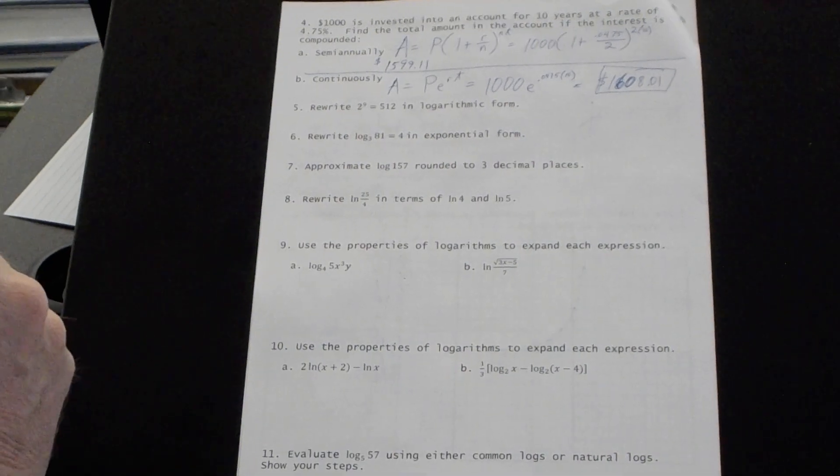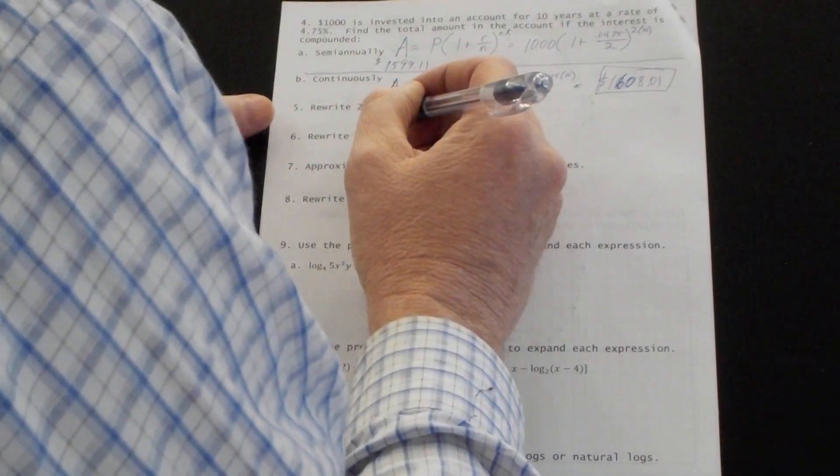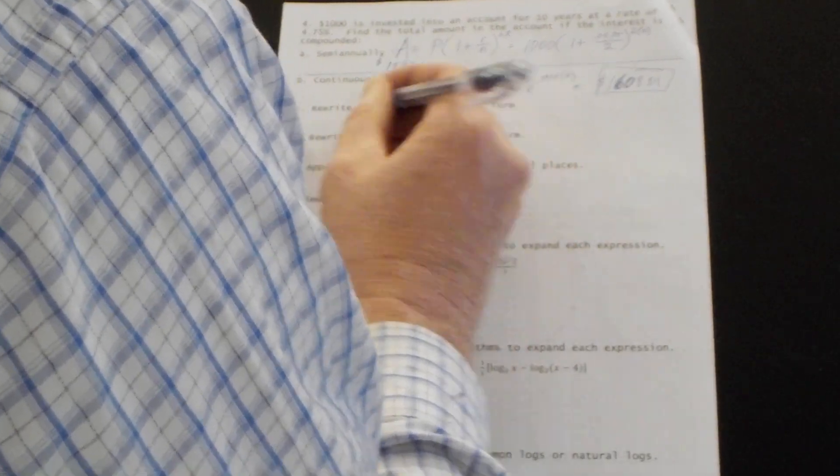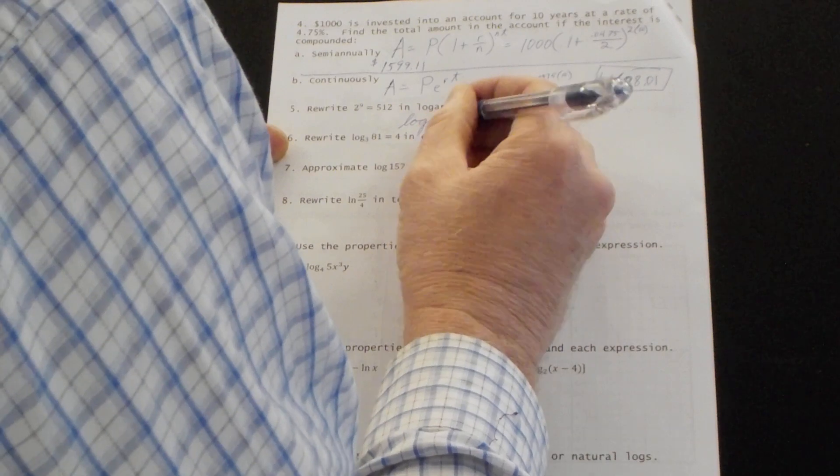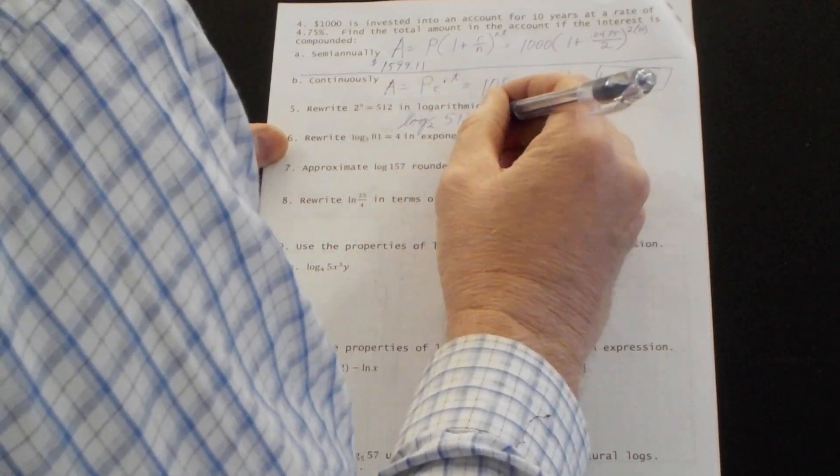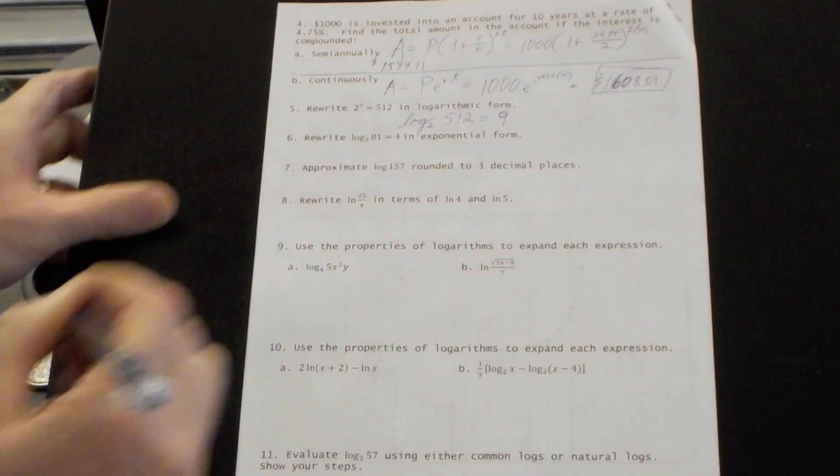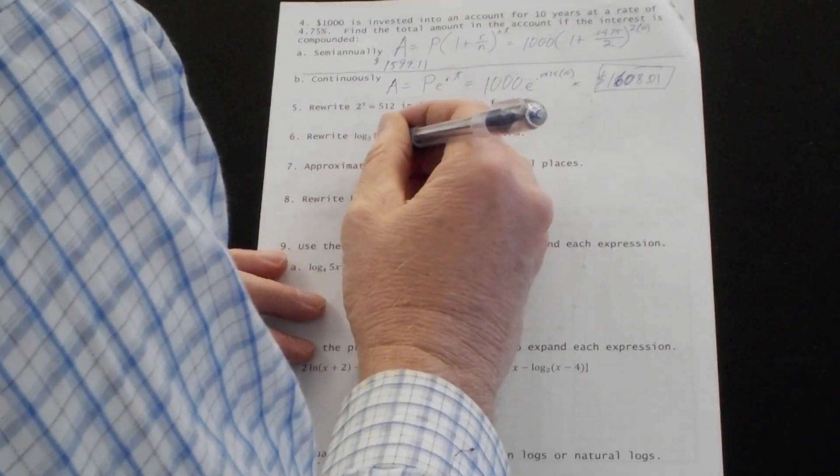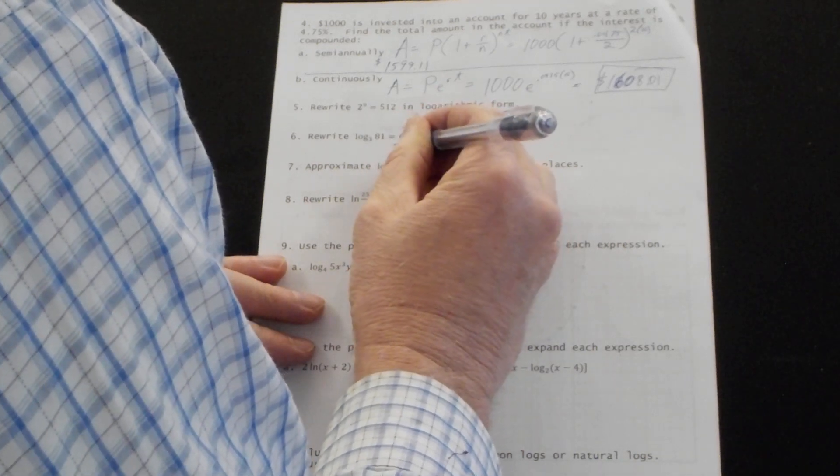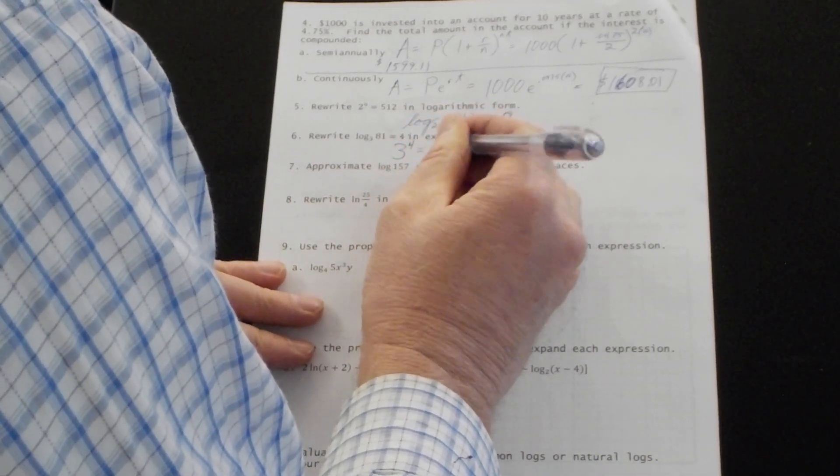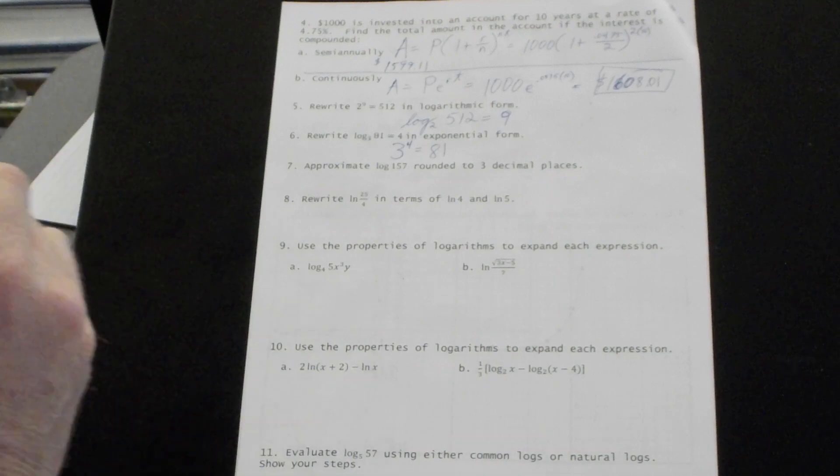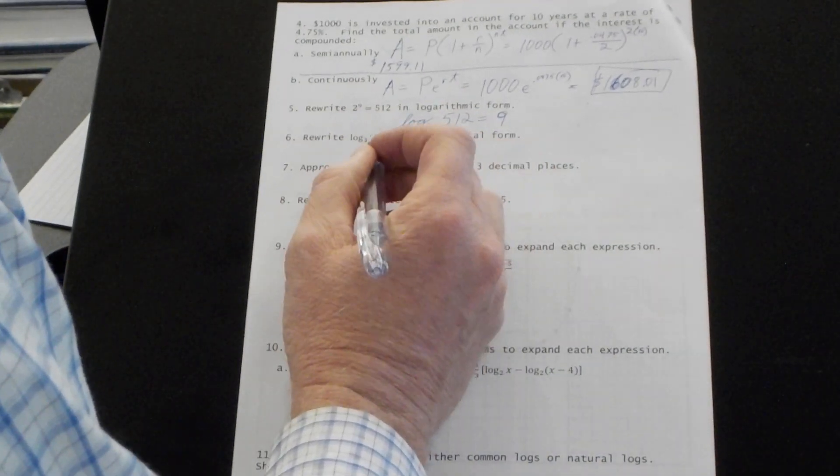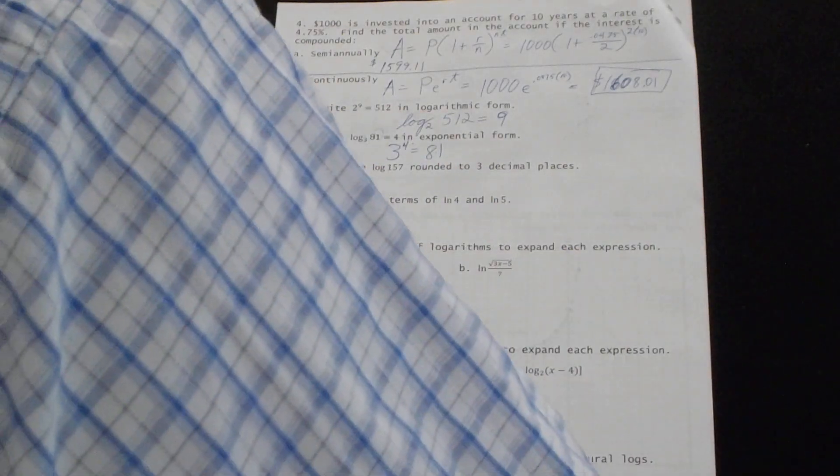Number five. Two to the ninth power in logarithmic form. That would be the log. This is the base. Log base 2 of the answer, 512, is the exponent, 9. Log base 2 of 512 is 9. Log base 3 of 81 is 4. 3 is the base. 4, the answer is the exponent. And the answer of the logarithm is the exponent. And then the answer of the exponential is this number right here.